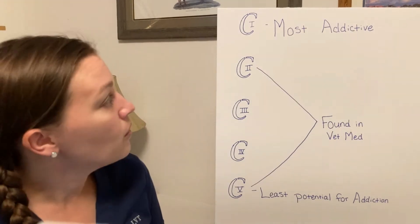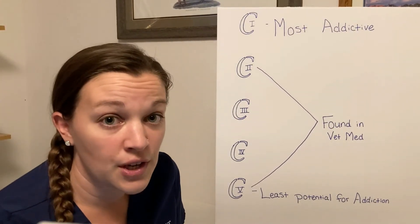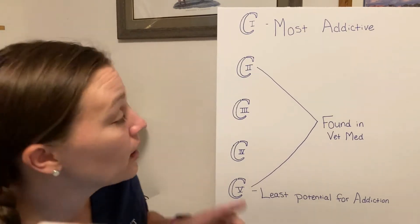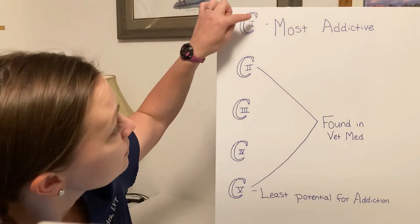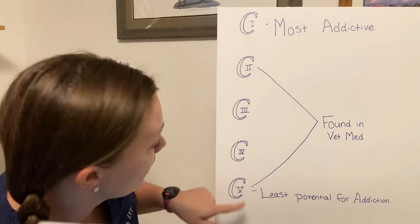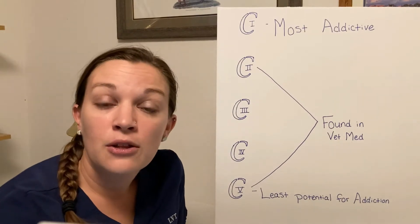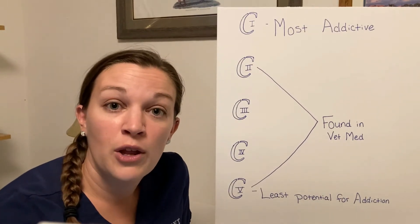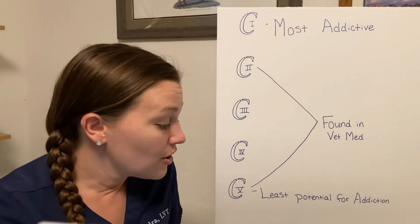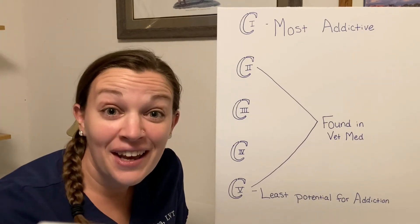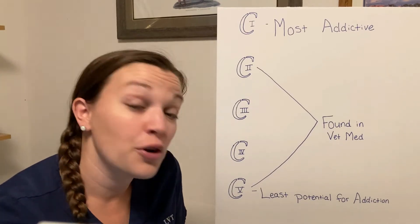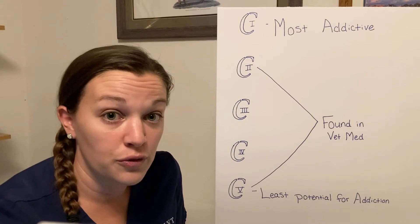So how we know what the controlled drugs are is on the drug label — there will be a C with a Roman numeral inside of it, just like I have on my poster here. So a C1, C2, C3, C4, and C5. We're going to be looking at the drug labels to determine whether or not this little symbol is present. I've got my little trash bucket of appropriately discarded empties, and I'm going to show you some labels for controlled drugs.